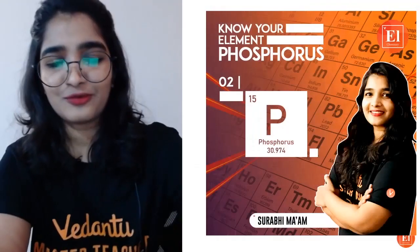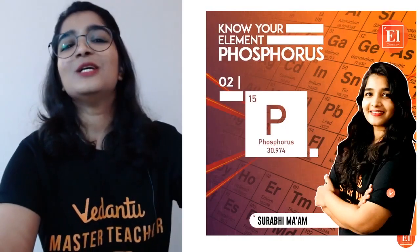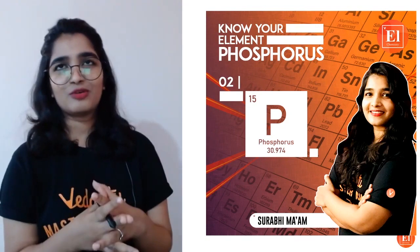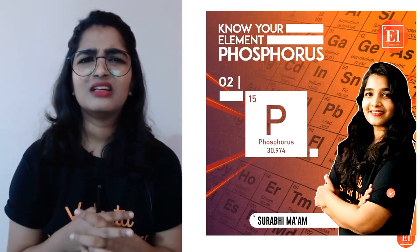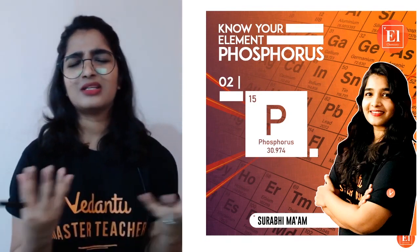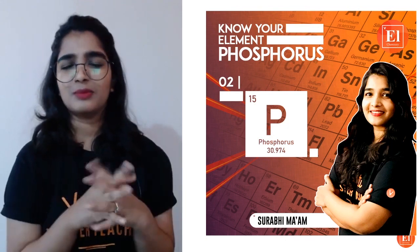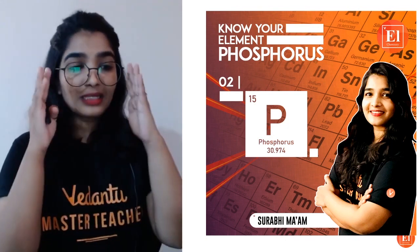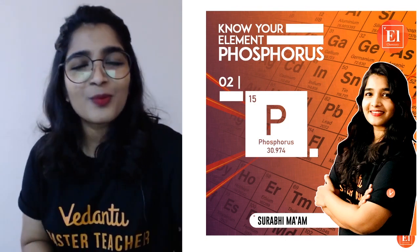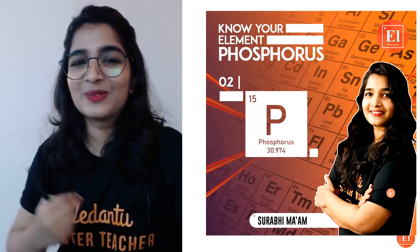As you have guessed, our element is phosphorus! What does everyone already know about phosphorus? Its atomic number is 15, with atomic mass 30.974 — approximately 31. But there are other interesting properties you will be learning in today's session.